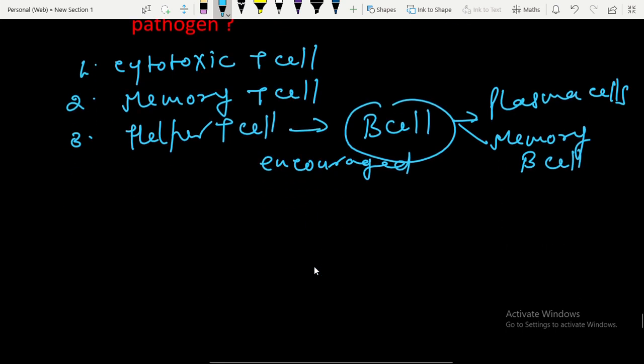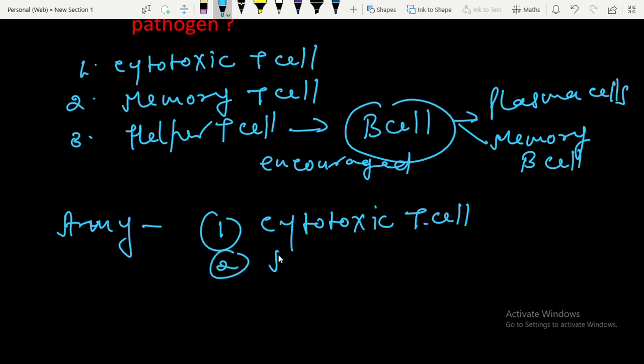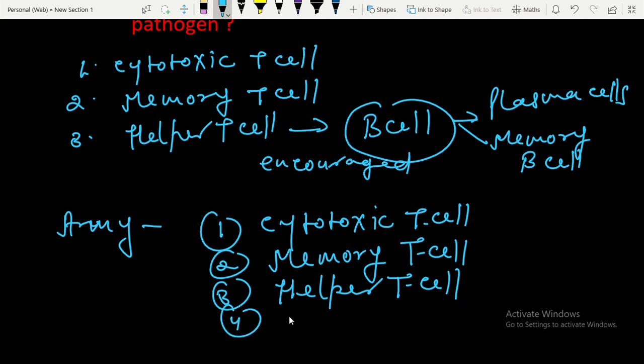As a result we are ready with our army of cytotoxic T-cell, memory T-cell, helper T-cell, plasma cell, and memory B-cell.